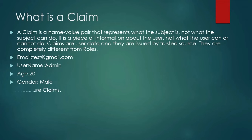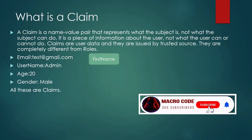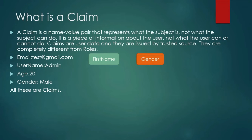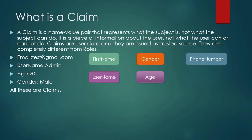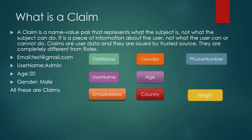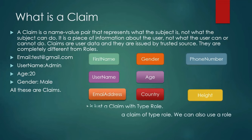Some of you may wonder about first name — first name is information about a user, so first name is also a claim. The name-value pair would be 'first name' with value 'John', 'gender' with value 'male', 'phone number' with the user's phone number, 'username' with value 'admin', 'age' with value '20', 'email address' with value 'test@gmail.com', 'country' with the user's country, and 'height' with a value like '7'.